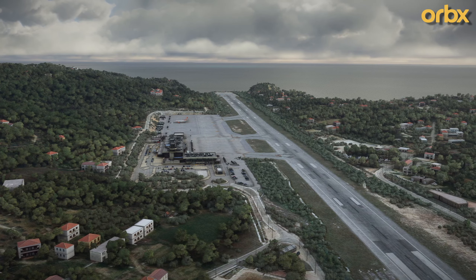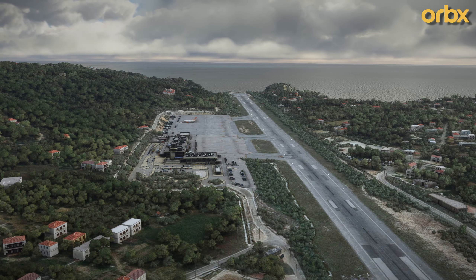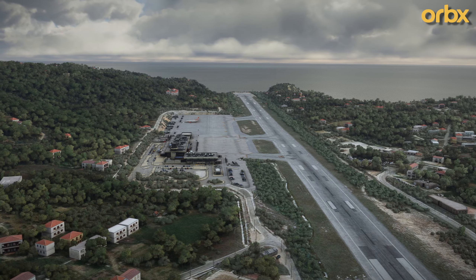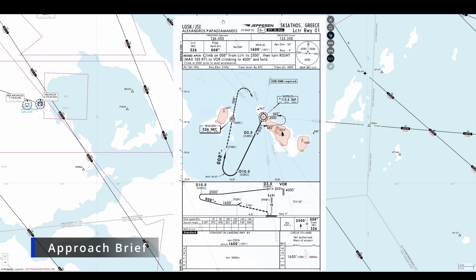Now let's review the approach plate and see what we will be flying. That's our approach plate right here. We are going to be doing the Locator Runway 01 approach. Our runway is right here, and when we start in the aircraft we will be holding at the SKP VOR, which is right here. So we'll start from there and start planning our approach.